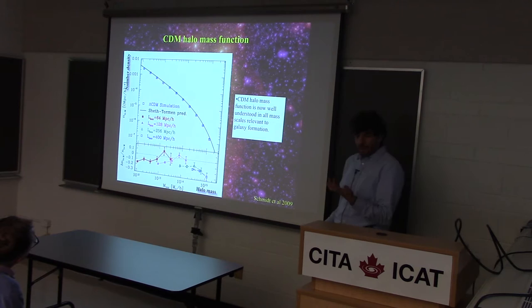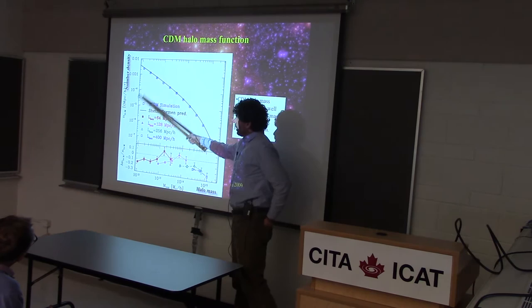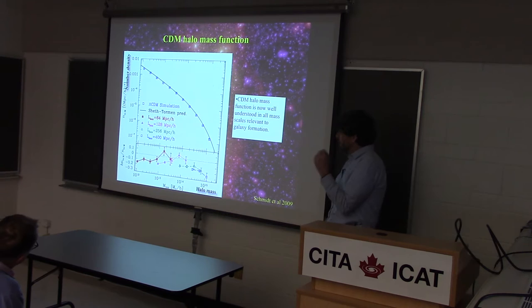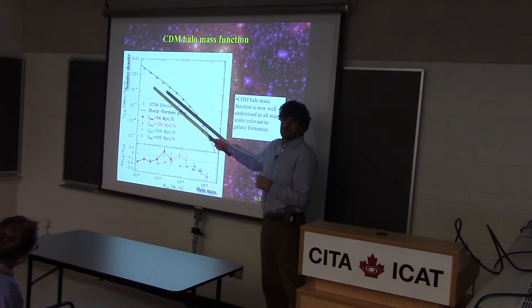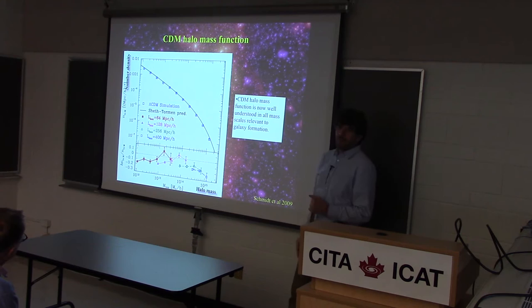We can count dark matter halos as a function of mass — number per unit volume. These are results from simulations, and this mass function is very well understood now. Through theoretical work we understand from good first principles how cold dark matter produces this particular mass function. The things I'm telling you are way beyond debate. All you need to make this a prediction is the cosmological parameters — H-naught, omega matter — and we know those from CMB and large-scale structure.